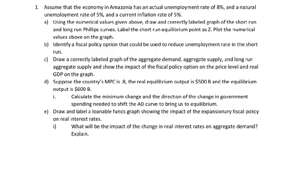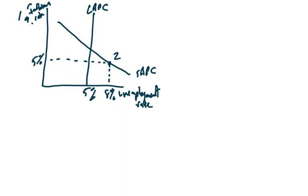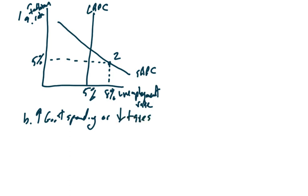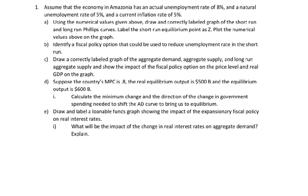Part B says: identify a fiscal policy option that could be used to reduce the unemployment rate in the short run. Since we are in a recession, we would have to do expansionary fiscal policy and we could either increase government spending or decrease taxes. Remember, we just need one, so pick one or the other. Either one of these answers is acceptable.